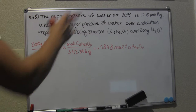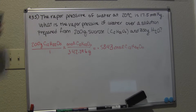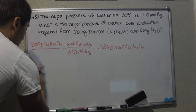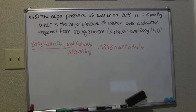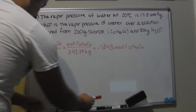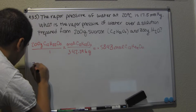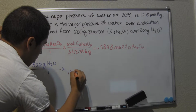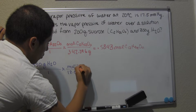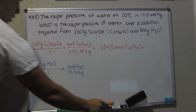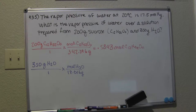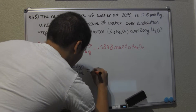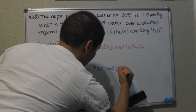Now let's go ahead and convert our 350 grams of H₂O into moles of H₂O. So we have 350 grams of H₂O, multiplied by the molar mass: 18.016 grams per mole of H₂O. That gives us 350 divided by 18.016, a total of 19.427 moles of H₂O.